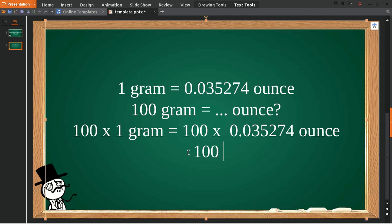Now 100 times 1 gram equals 100 grams, and then 100 multiplied by this number equals 3.5274 ounces. And that's how you answer the question.